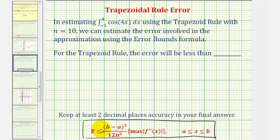The error is going to be less than or equal to the quantity b minus a cubed, where a and b are the limits of integration, divided by 12n squared times the absolute value of the maximum of the second derivative function on the closed interval from a to b.